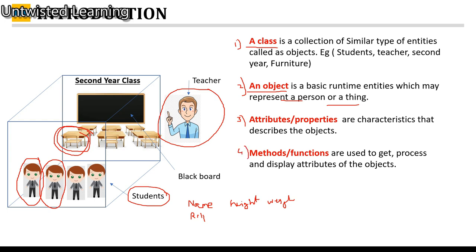The fourth terminology is methods and functions. Methods and functions are used to get, process, and display attributes of the object. You may have multiple functions to get information regarding different types of objects, functions to process data, and display functions to show results.